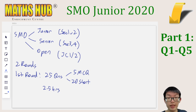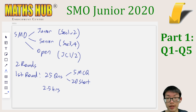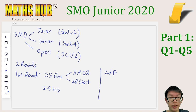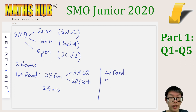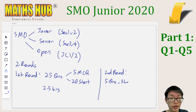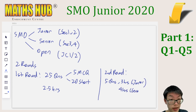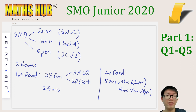For the open section, this is similar, except that there are no multiple choice questions. As for the second round, this is more challenging and requires full working. There are 5 questions to be solved in 3 hours for the junior section, and 4 hours for the senior or open section. So only the better performing students in the first round would be selected for the second round.